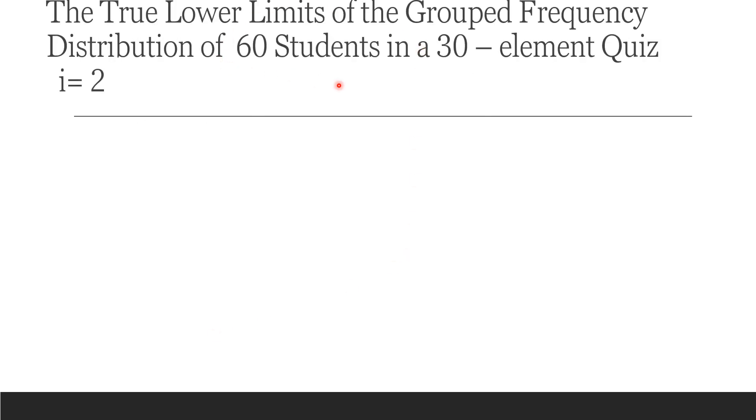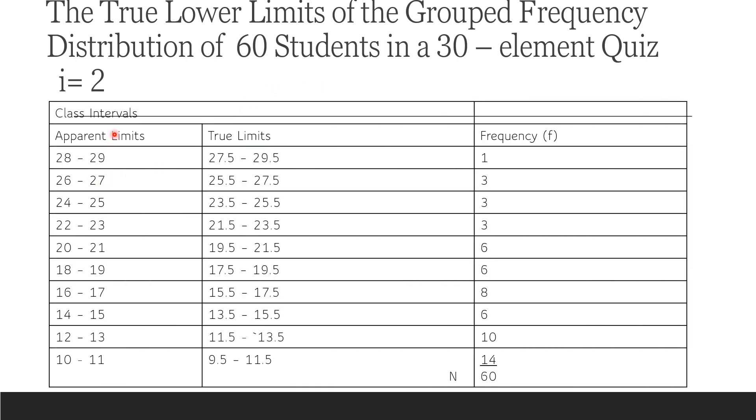We have here the true lower limits of the grouped frequency distribution of 60 students in a 30-element quiz where i equals 2. Remember, we add and subtract—we plus and minus 0.5.